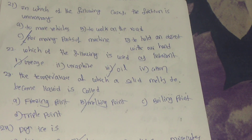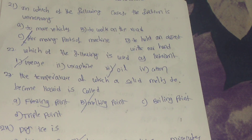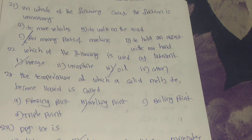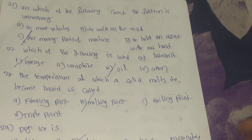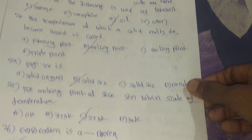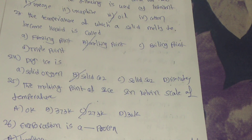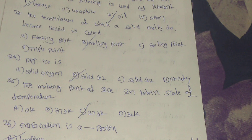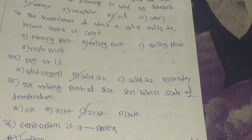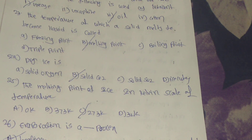23rd question: the temperature at which a solid melts to become liquid is called? Answer: option B, melting point. 24th question: dry ice is? Answer: option B, solid CO2, solid carbon dioxide.